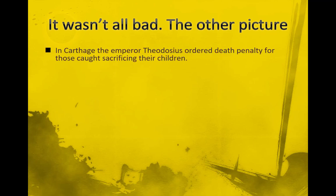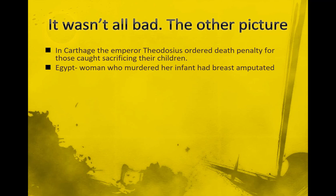In Carthage, Emperor Theodosius - a Roman emperor around 395 AD - ordered the death penalty for anyone caught sacrificing their children. Also, about the same time in Egypt, a woman who murdered her infant would have her breast amputated. So there were severe punishments for people who killed their children, with different laws in different parts of the world at the same time.